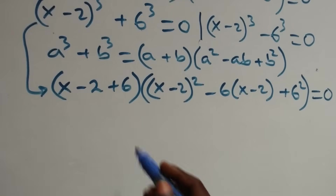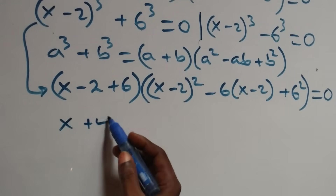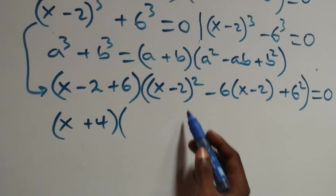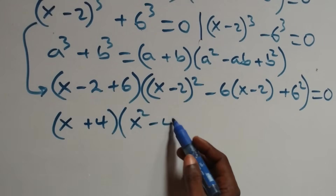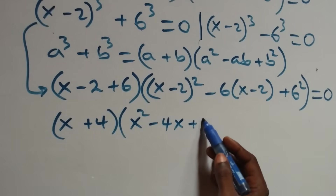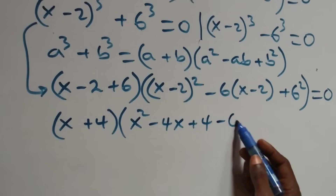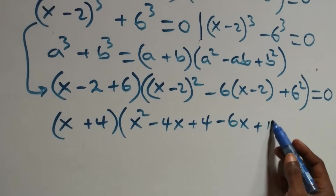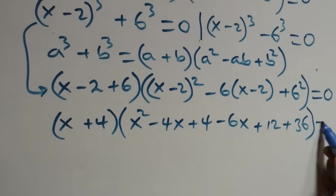That gives us x plus 4 in brackets — since 6 minus 2 is 4 — open brackets, then the expansion gives us x squared minus 4x plus 4, minus open this bracket we have minus 6x, then plus 12, plus 6 squared which is 36, close brackets, then equals to zero.